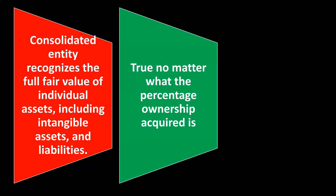The consolidated entity recognizes the full fair value of individual assets, including intangible assets and liabilities, regardless of the percentage ownership acquired. You might think that if one company only has 50-something percent control, you'd only take that percentage of the other company's assets — but that's not the case. If you're consolidating the books, even without 100% ownership, you consolidate the full assets and liabilities. The justification is that if one company has control, it can direct the other company's assets and liabilities, so it makes sense to report the full combined amounts.